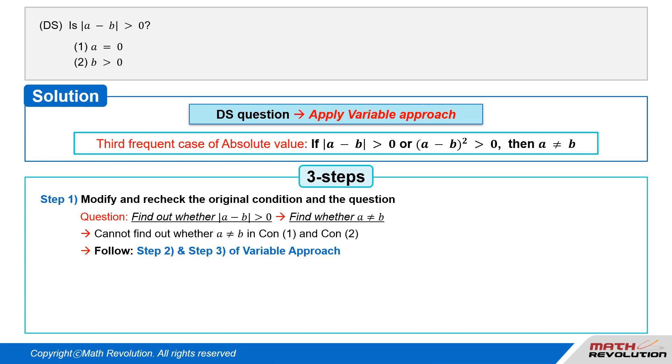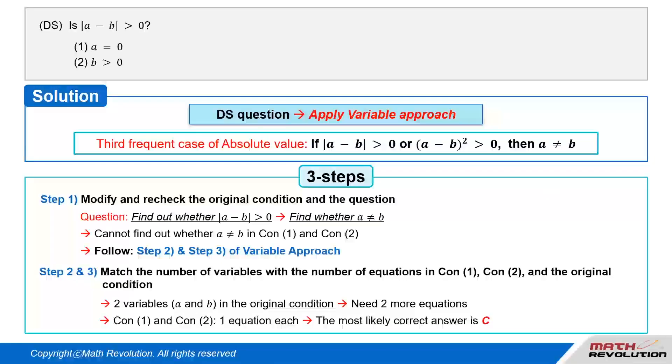The explanation for this type of question in the official guide is not as simple. Follow the second and third steps. From the original condition, we have two variables, a and b. To match the number of variables with the number of equations, we need two more equations. Since conditions 1 and 2 will provide one equation each, C would most likely be the answer.